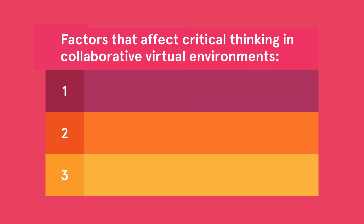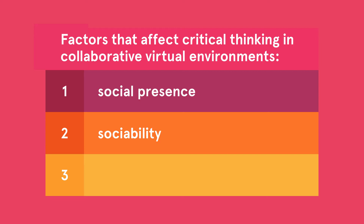This study explores three factors that affect critical thinking in collaborative virtual environments. They are social presence, the ability of users of the virtual environment to emotionally and socially communicate as real people in that environment; sociability, or how the environments might be different as social spaces conducive to social interaction in learning communities; and social interaction, which are mutually interdependent actions between two or more e-learners in a collaborative virtual learning community.